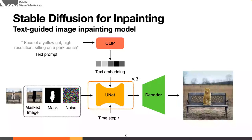For inpainting, you take the pre-trained stable diffusion model and add additional inputs to the U-Net: a masked image to preserve background information, and a mask indicating the region to be filled. The pre-trained model is taken and a few layers are added at the front of the U-Net, then fine-tuned slightly. The result preserves the background exactly while the foreground object is guided by the text prompt.